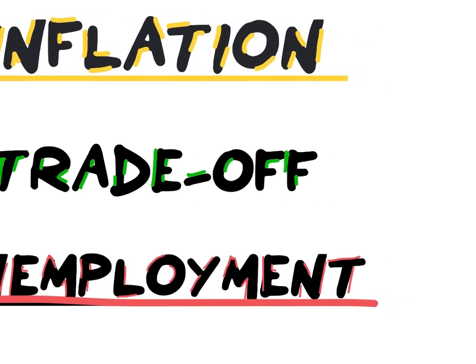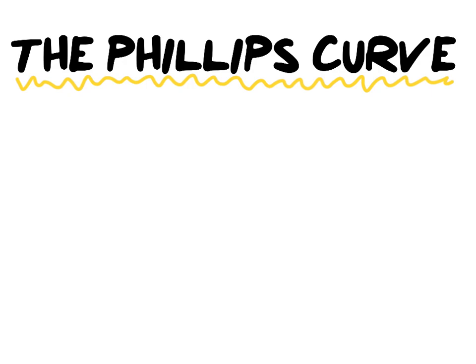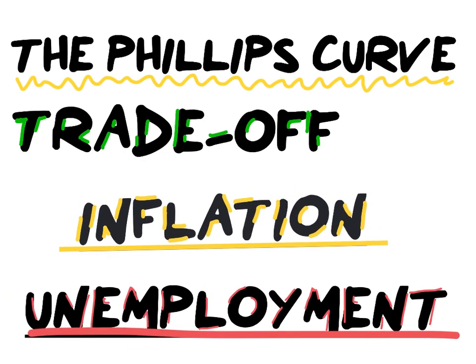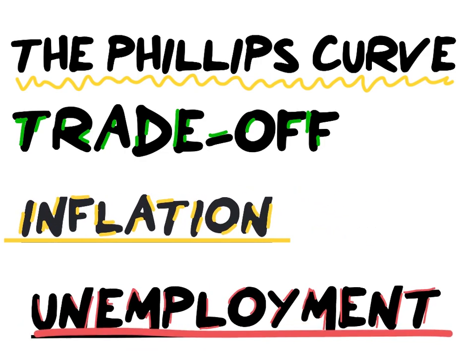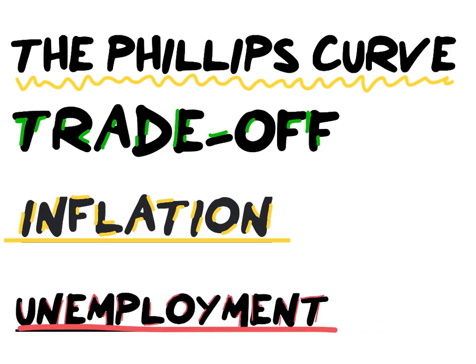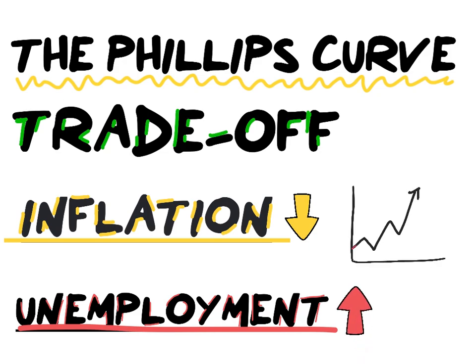Importantly, the negative relationship signifies a trade-off between inflation and unemployment. Phillips therefore suggests that one cannot increase without a decrease in the other. If we want to reduce inflation, this would be at the cost of higher unemployment. The Phillips curve therefore illustrates an inverse or trade-off between inflation and unemployment.